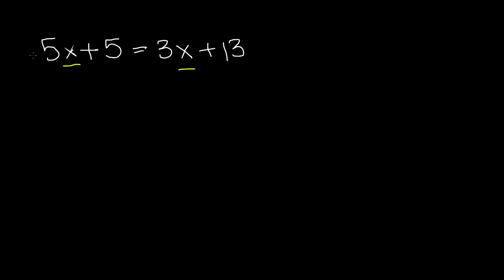So we're going to use inverse operations on like terms. We have positive 5x. We're going to do negative 5x on both sides but on only the like terms, so on 3x. Positive 5x and negative 5x cancel each other out so we're left with 5 on this side is equal to negative 5x and positive 3x, which gives us negative 2x plus 13.